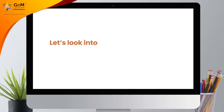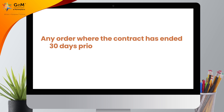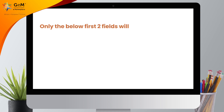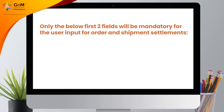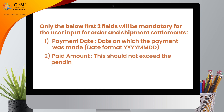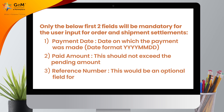Let's look into the eligibility criteria. Any order where the contract has ended 30 days prior to today is eligible for settlement using this functionality. Only the below first two fields will be mandatory for user input for order and shipment settlements: Payment Date — the date on which the payment was made, in YYYY-MM-DD format — and Paid Amount, which should not exceed the pending amount. Reference Number is an optional field for the users.